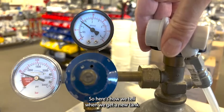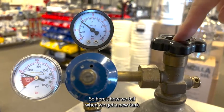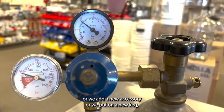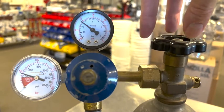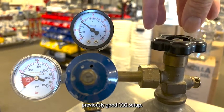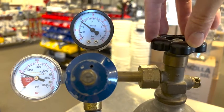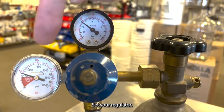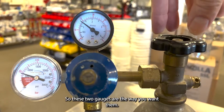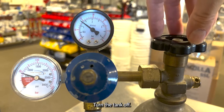So here's how we tell: when we get a new tank or we add a new accessory or we put on a new keg, or we make any adjustments at all to a previously good CO2 setup, turn the tank on, set your regulator so these two gauges are the way you want them, turn the tank off.